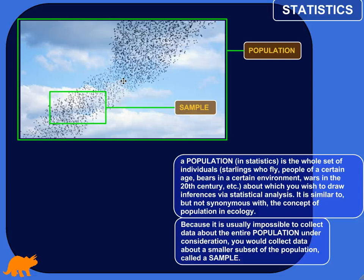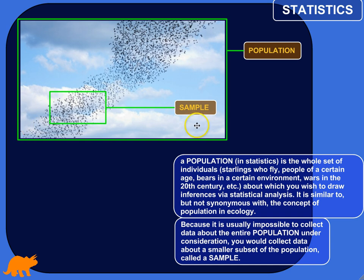Then you draw inferences: if this is true about this smaller subset, if this is true about my sample, then it's probably generally true about the population I'm interested in. Here's a picture to visualize this — sort of the metaphor in mind. Your population would be all these birds, not every bird in the universe, but narrowed down to the birds within a certain field of view. Since you can't get numbers on every single one, you take a sample and say what's true about these is probably true about all of them.